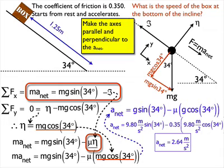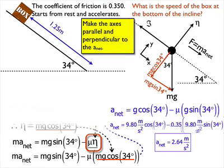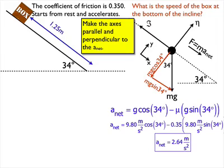I've got an acceleration, and now I can use kinematics to find the speed of the box at the bottom of the incline. So using kinematics, I'll set it all up with my list of givens.